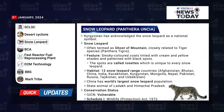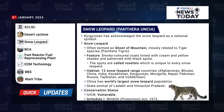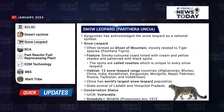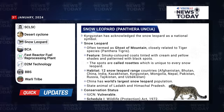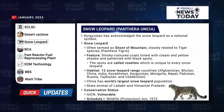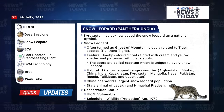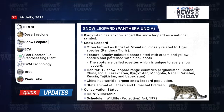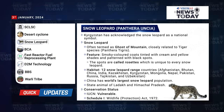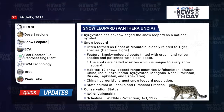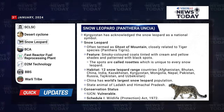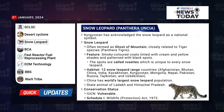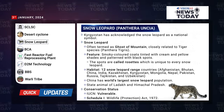Kyrgyzstan has acknowledged the snow leopard as a national symbol. The snow leopard, often termed the ghost of the mountain, is closely related to the tiger species. Its features include smoky-colored coats tinted with cream and yellow shades, patterned with black spots called rosettes, which are unique to every snow leopard. Its conservation status is vulnerable, and it comes under Schedule 1 of the Wildlife Protection Act, 1972.